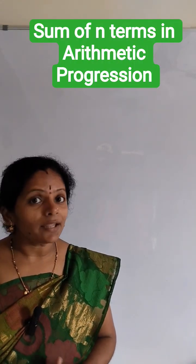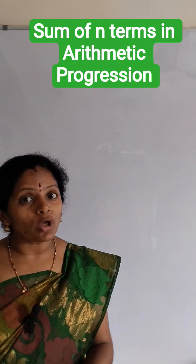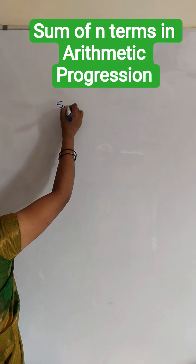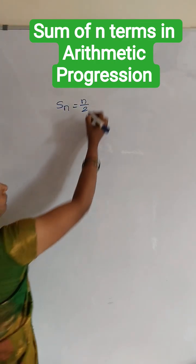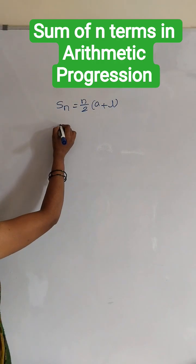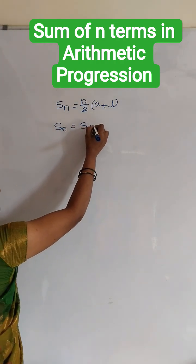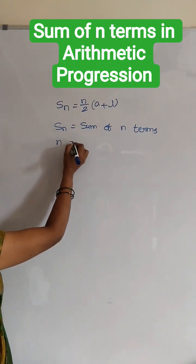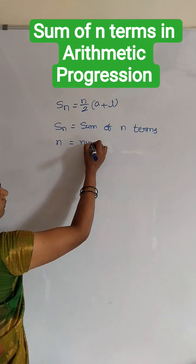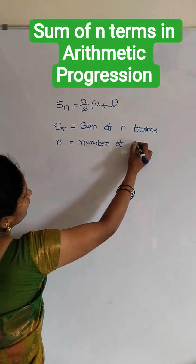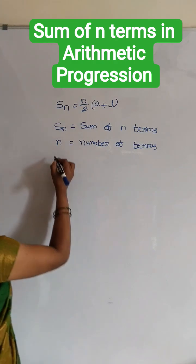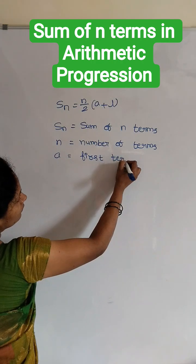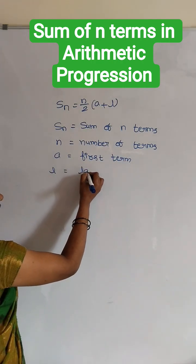If there are n terms in an arithmetic progression, the sum of all these terms can be calculated by using this formula. Sn is equals to n by 2 into a plus l, where Sn is the sum of n terms, n is the number of terms, a is the first term, and l is the last term.